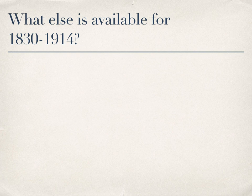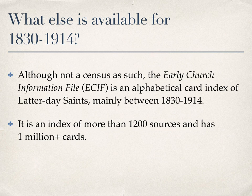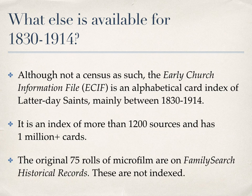What else might be available for the 90 years between 1830 until the first census was taken in 1914? There is a very good resource — not a census as such, but the Early Church Information File, or the ECIF. This is an alphabetical card index of Latter-day Saints and some of their neighbors, mainly between the years 1830 to 1914. It's an index of more than 1,200 sources and has over a million cards, microfilmed onto 75 rolls. They are available on FamilySearch Historical Records — not indexed, but easily searchable online.